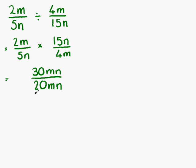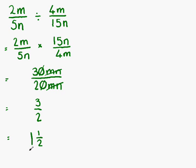Can we simplify? Yes. We have mn on the top and mn on the bottom, which can be cancelled. We have 30 over 20, so we can cancel the zeros, leaving us with 3 over 2. That could be left as your answer, or you could change that into a mixed number, which is 1 and 1 half. And that is our final answer.